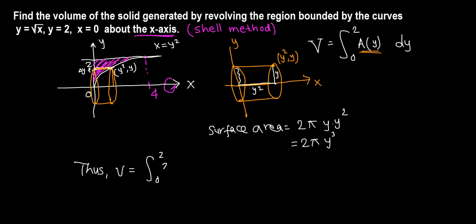Now 2π constant can be pulled outside, and the anti-derivative of y cubed is y to the fourth over 4, evaluated from 0 to 2. So 2π over 4, which is π over 2.